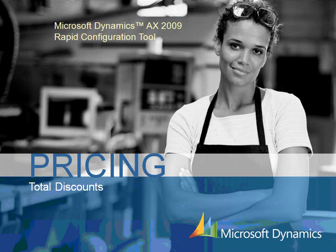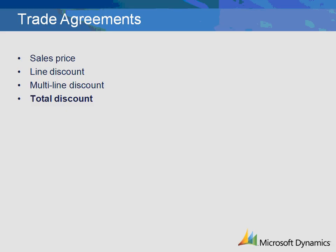This demonstration explains the setup of total discount pricing in Microsoft Dynamics AX 2009. Microsoft Dynamics AX uses trade agreements to define discounts and prices for customers and items. Trade agreements are also used for vendors, but the pricing demonstrations will review customer pricing. There are four types of trade agreements, and this demonstration will review how to set up total discount trade agreements.